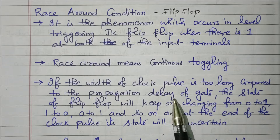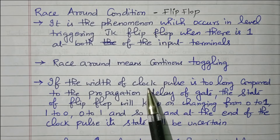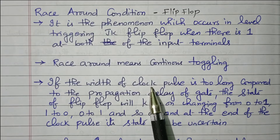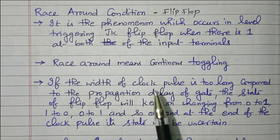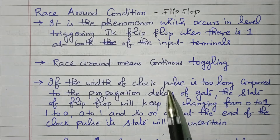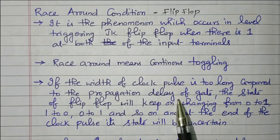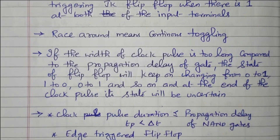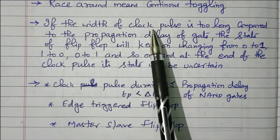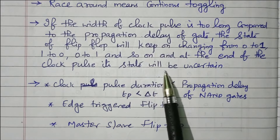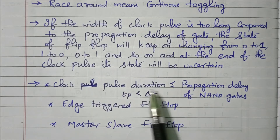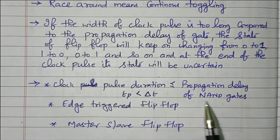The clock pulse is too long but the propagation delay of the gate is lesser. So the state changes from 0 to 1, but after changing, if the clock pulse is still present, it will keep on changing — 0 to 1, 1 to 0. So we need to maintain the clock pulse width less than the propagation delay of the gate. That is one remedy. The race-around condition exists when the clock pulse is more and propagation delay is less, causing 0 to 1, 1 to 0 changes.